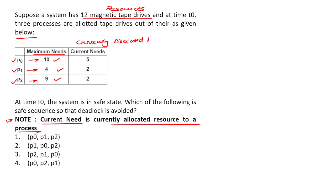So maximum need is 10 and currently we have allocated 5 resources to P0. Similarly, in case of P1, maximum need is 4 and we have already allocated 2 resources.